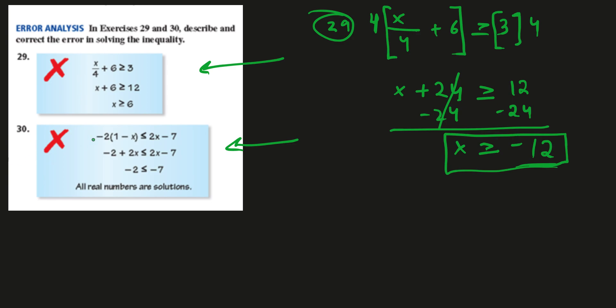Okay, let's go to number 30 here. Let me do this in red. All right, number 30. So let's see what this person's doing. Negative 2 times 1 minus x is greater than or equal to 2x minus 7.